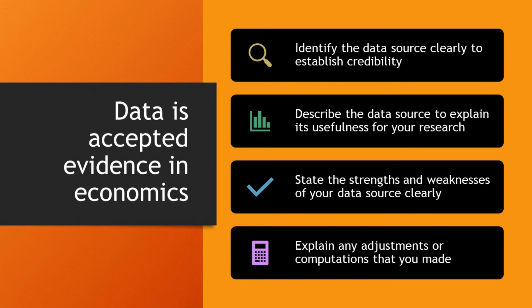The best kind of evidence is obviously data — when you have data, nobody asks questions. But this should be good data. Don't use a lot of sources; use one or maybe two sources, but be sure you know your data. It should be credible — you should be able to explain its usefulness, where it comes from, and what its characteristics are. You should know its strengths and weaknesses and state them in the data section. And you should explain any adjustments you made, for example if you deflated the data and how you did that.